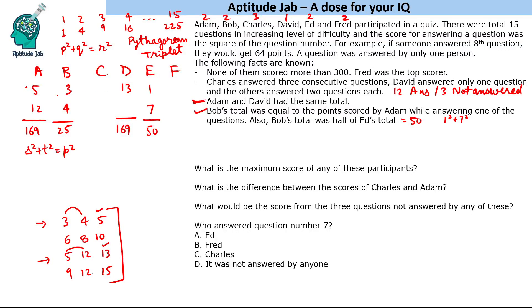Now we are left with two people, and we have to find five more questions. Charles answered three consecutive questions. Let's jot down the question numbers to find out which questions are still to be answered. We have taken 1, 3, 4, 5, 7, 12, and 13.